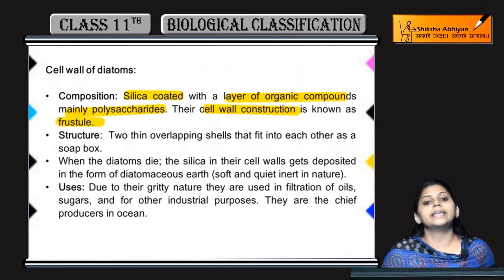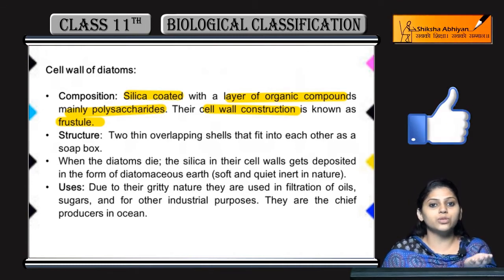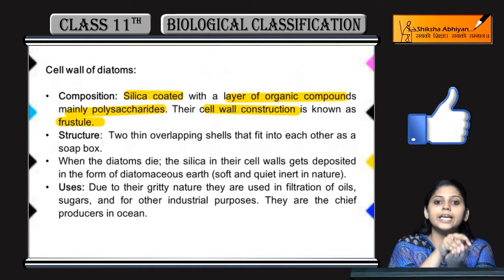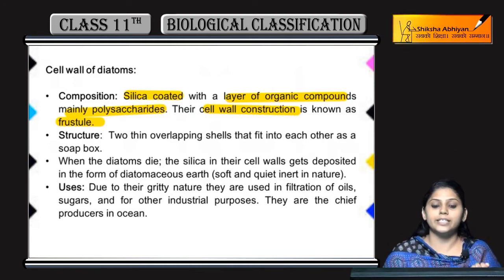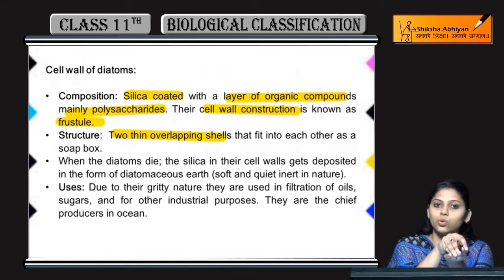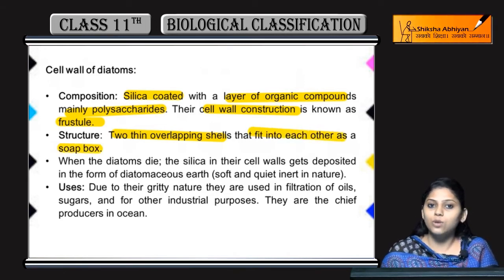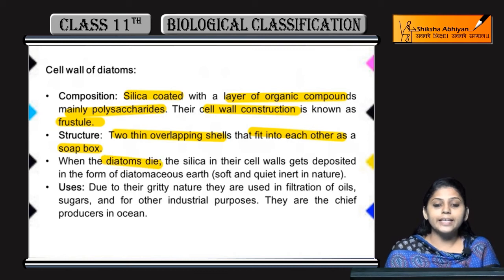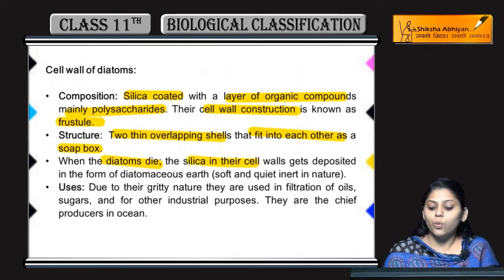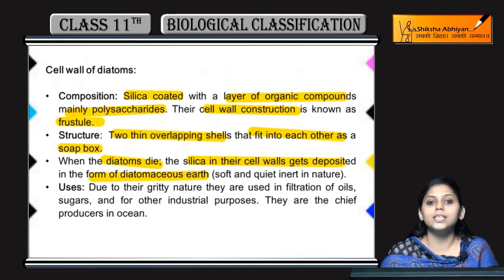Diatoms ka structure kaisa hota hai? Aapne soap box dekha hoga — soap case hota hai aur uski lid hoti hai. Diatoms ka structure bhi kuch aisa hota hai: two thin overlapping shells hoti hai, overlapping shells jaise soap ki shells hoti hai, that fit into each other as a soap box. Jab yhe diatoms die kar jate hai, toh jo yhe silica component hai, woh cell wall mein deposit ho jata hai, aur banata hai diatomaceous earth.